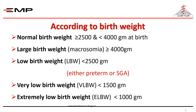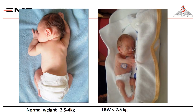Newborns are also classified according to birth weight: normal birth weight is from 2,500 to 3,999 grams; large birth weight or macrosomic is 4 kilograms or more; low birth weight is less than 2,500 grams — the neonate may be either pre-term or small for gestational age; very low birth weight is less than 1,500 grams; and extremely low birth weight is less than 1,000 grams. On the left is a normal birth weight neonate, while on the right is a low birth weight neonate.